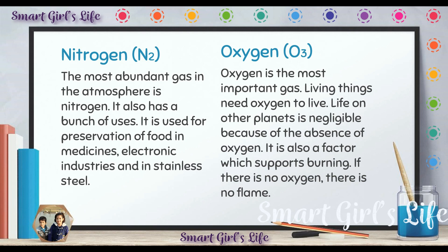Nitrogen, N2, is the most abundant gas in the atmosphere. That means it is the gas that has the most quantity in the air. It also has a bunch of uses: it is used for preservation of food, in medicines, in electronic industries that create electronic materials, and in stainless steel — like the stainless steel pans and plates we use in our homes.